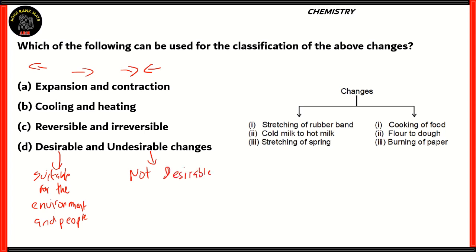Looking at option A, expansion and contraction: the first example, stretching of a rubber band, fits expansion. The second, cold milk changing to hot milk where molecules expand, also fits. Stretching of a spring also fits expansion. However, cooking of food is not an example of contraction, and none of the three on the other side is an example of contraction. So option A is incorrect.